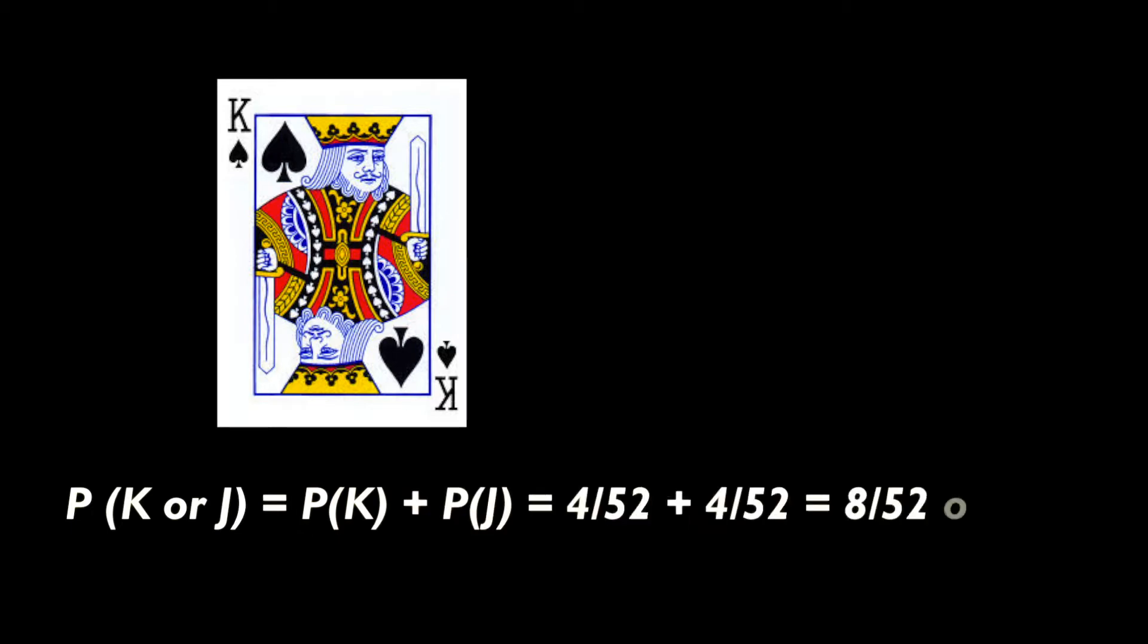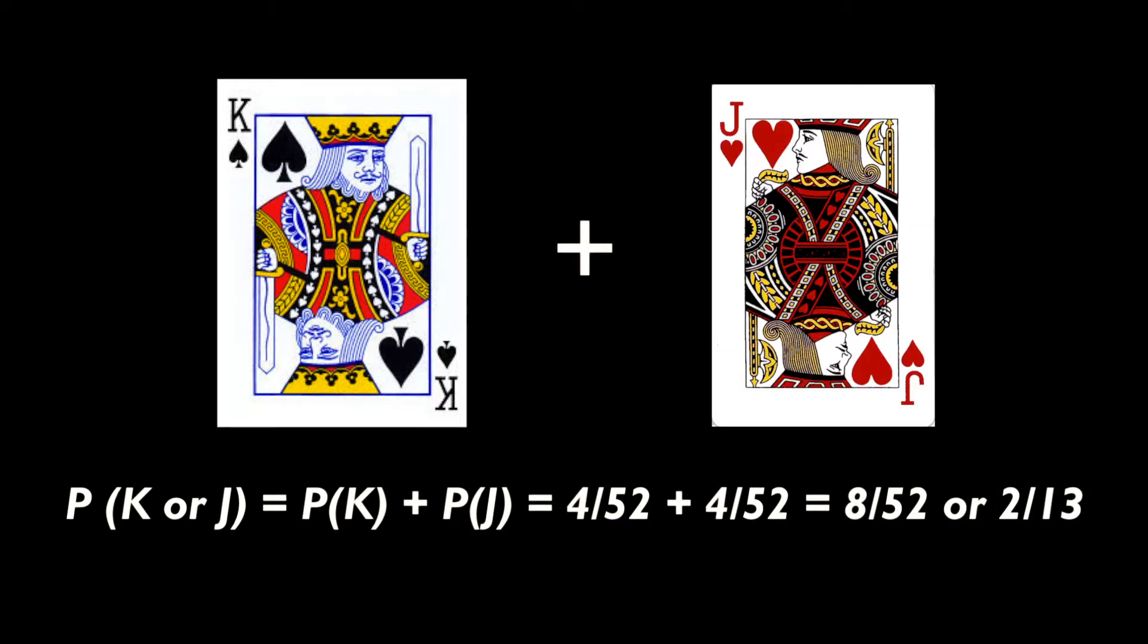So you ask yourself, are there any kings that are jacks? No. Then kings and jacks are mutually exclusive, so that the probability of a king or a jack equals the probability of getting a king plus the probability of getting a jack, which is 4 out of 52 plus 4 out of 52, which is 8 out of 52, and that reduces to 2 out of 13.